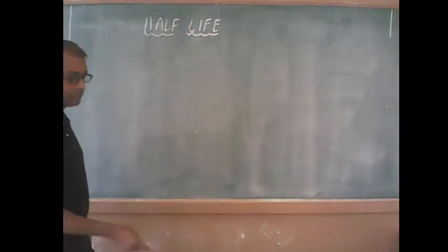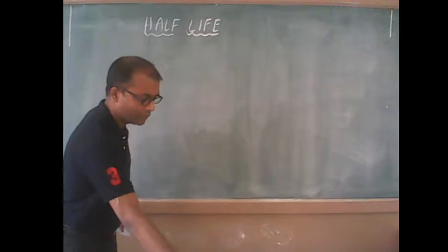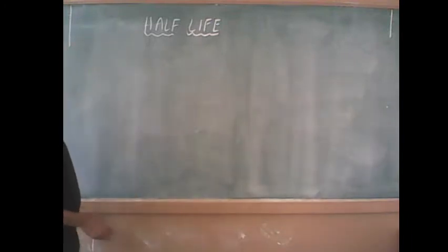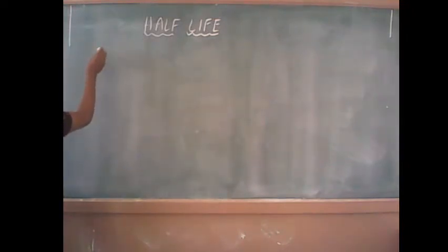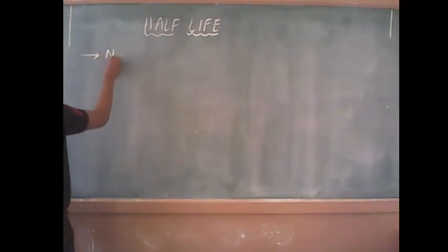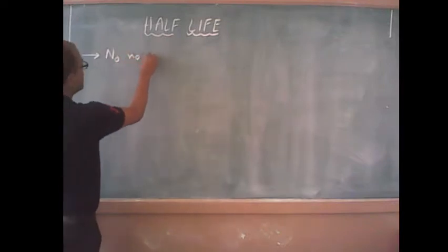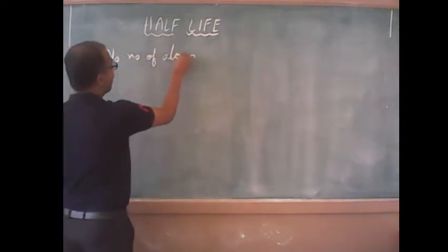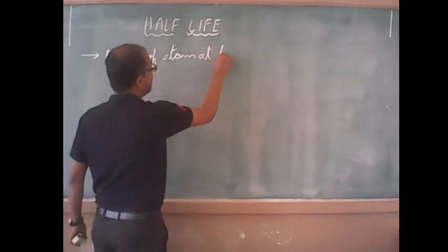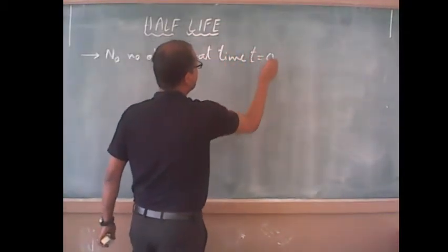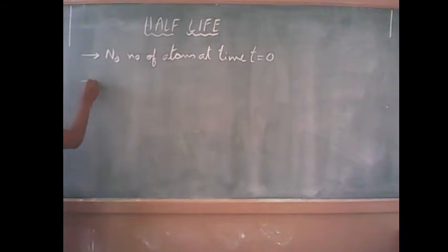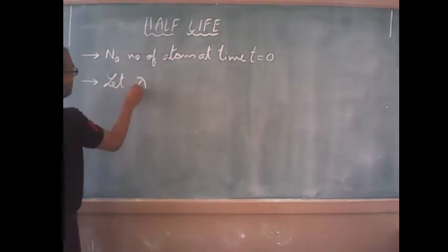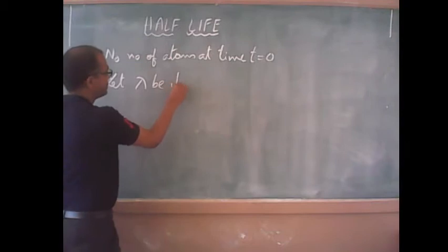The next thing we will be doing is find out the mathematical expression for the half-life of a radioactive substance. So let us consider a radioactive substance having n₀ number of atoms at time t equals 0. That is, the radioactive substance has n₀ number of atoms initially. Let lambda be its disintegration constant.